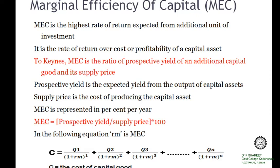Prospective yield is the expected yield from the output of capital assets. Supply price is the cost of producing the capital asset. MEC is generally represented per percent per year. Thus, MEC can be stated as: MEC = (Prospective Yield / Supply Price) × 100.